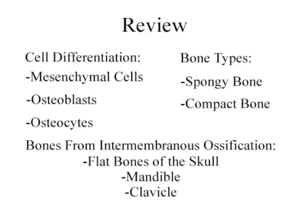In review, we began with mesenchymal stem cells, which, after replicating, differentiated into osteoblasts. The osteoblasts then released an uncalcified bone matrix, and after the matrix was calcified, they differentiated again into osteocytes. The initial bone created by this process is spongy bone, which can then be remodeled into compact bone. Examples of bones created through intramembranous ossification are the flat bones of the skull, the mandible, and the clavicle.